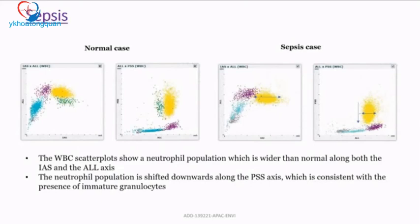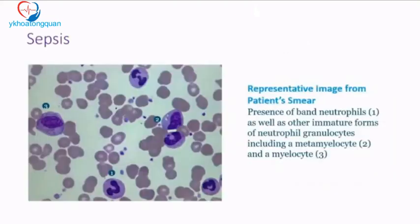This was a sepsis case from the ICU — a patient transferred from a peripheral hospital, already deteriorating on prior treatment. When the CBC was obtained in the ER, we alerted the ICU team that the IG count indicated impending sepsis. They immediately started high antibiotics, sent blood cultures, and initiated further testing, giving the patient a chance of survival.